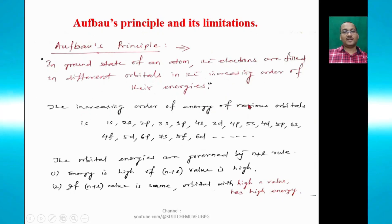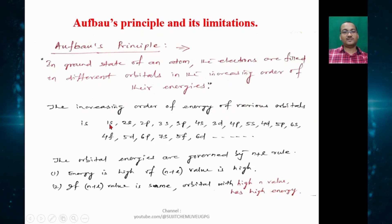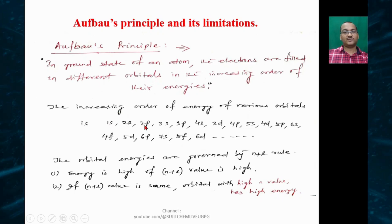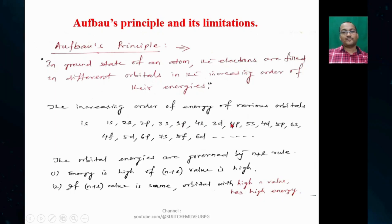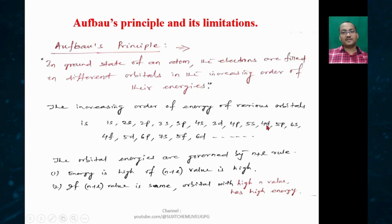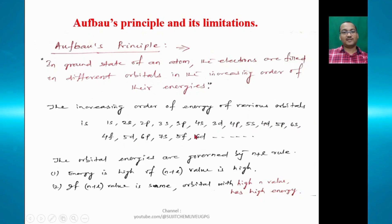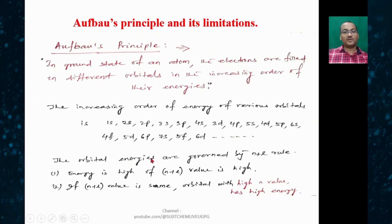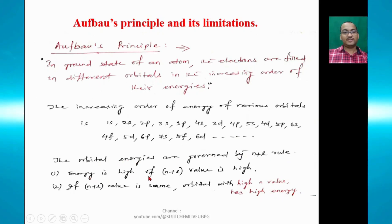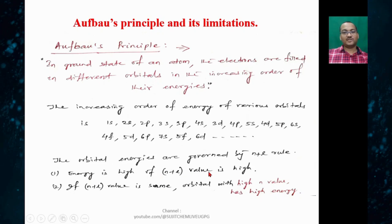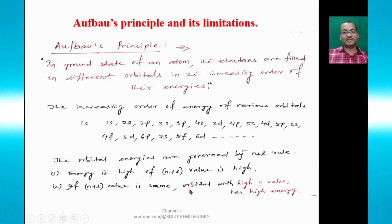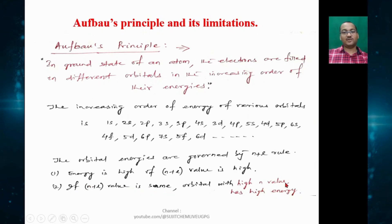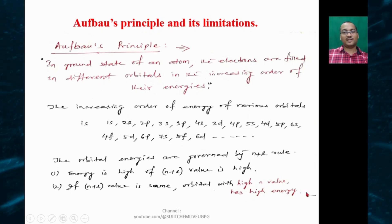The increasing order of energies in various orbitals follows this way: 1s, 2s, 2p, 3s, 3p, 4s, 3d, 4p, 5s, 4d, 5p, 6s, and so on. The orbital energies are governed by the n+l rule: energy is higher if the n+l value is higher. If the n+l value is the same, the orbital with the higher principal quantum number n has higher energy.